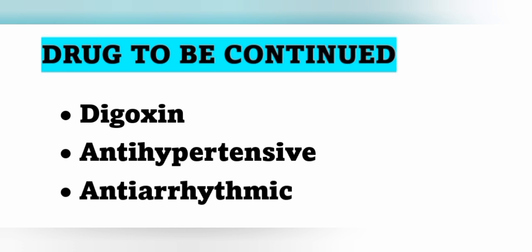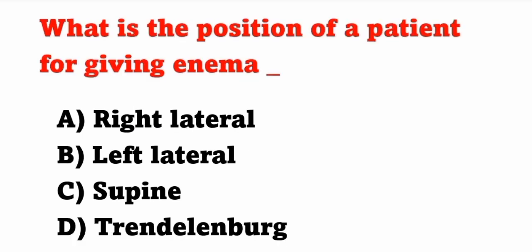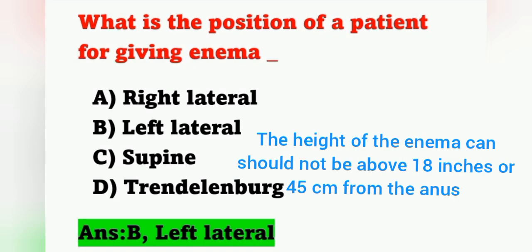First question: what is the position of a patient before giving an enema? Options: A) right lateral position, B) left lateral position, C) supine position, D) Trendelenburg position. The correct answer is left lateral position — option B. Also important: the height of the enema can should not be above 18 inches or 45 centimeters from the anus in case of cleansing enema.